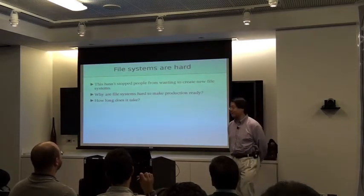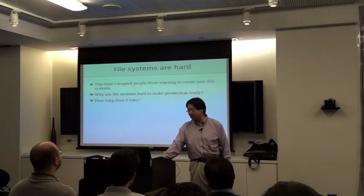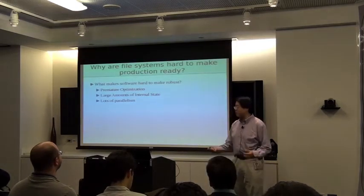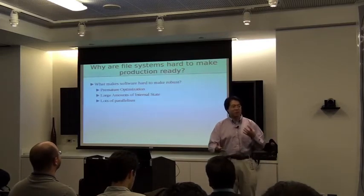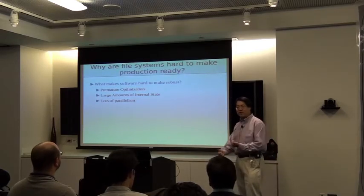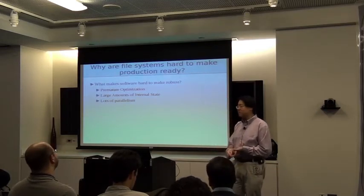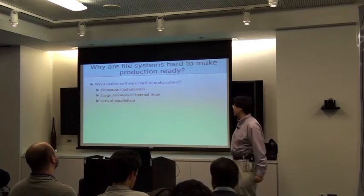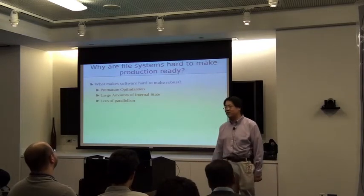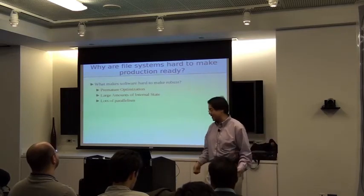File systems are hard. What makes software tricky to make reliable and robust? Three things: premature optimization — you make your code complicated; ample opportunities to make mistakes — the code needs to be fast, but there's usually a trade-off; and internal state, which adds complexity and makes things really hard to debug. And parallelism — another great thing that makes things harder.